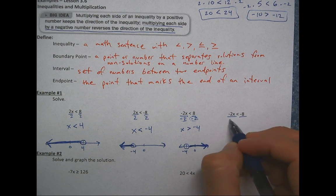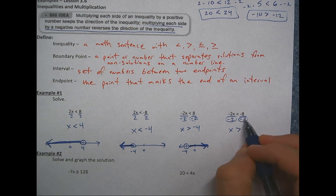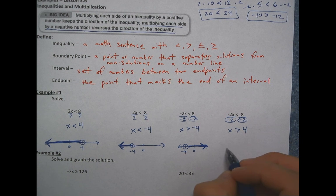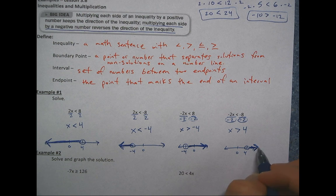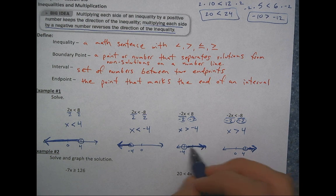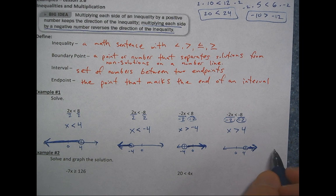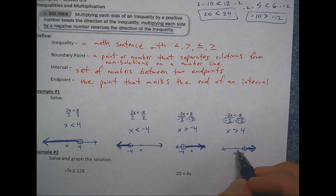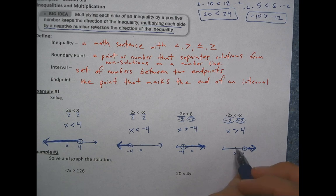Last of the four: -2x < -8. Again, it doesn't matter that the eight is negative — what matters is that we're dividing by a negative two. So we flip the inequality. Negative divided by a negative is positive, so x is greater than four. Open circle at four on the number line, arrow pointing right. Always put an arrow at the end of your shading — without it, the graph implies the solution set stops there. The arrow shows it continues infinitely. Check: zero — negative two times zero is zero, and zero is not less than negative eight, so zero correctly falls outside the solution set.